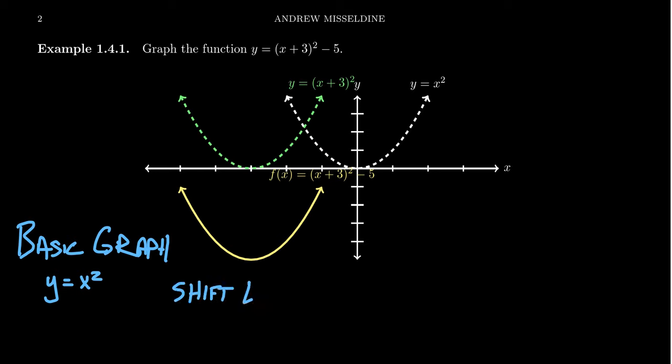That x plus 3 causes the graph to be shifted. We shift it to the left. We might have to reference the table we had from the previous video. We want to shift left by a factor of 3. And so you see that's what's happened here as we go from the white graph, the basic one, to the green graph, which is also a dashed curve right here.